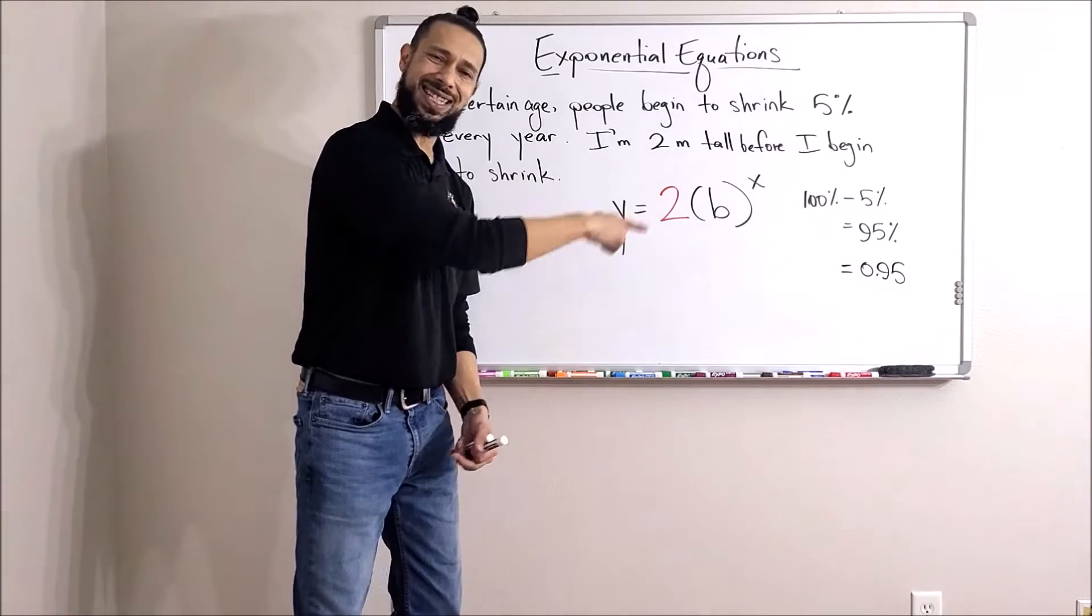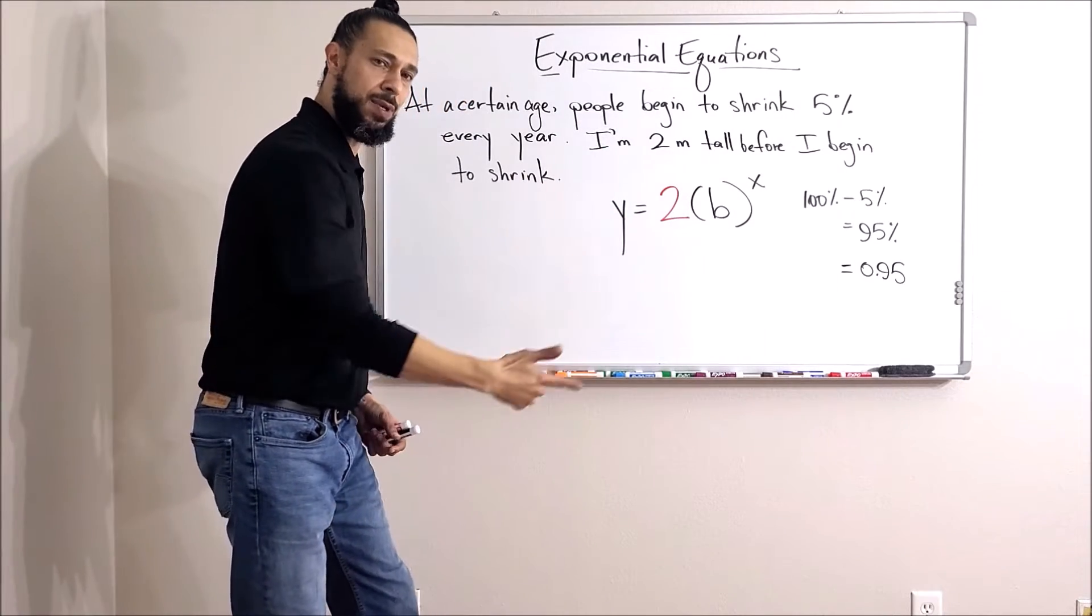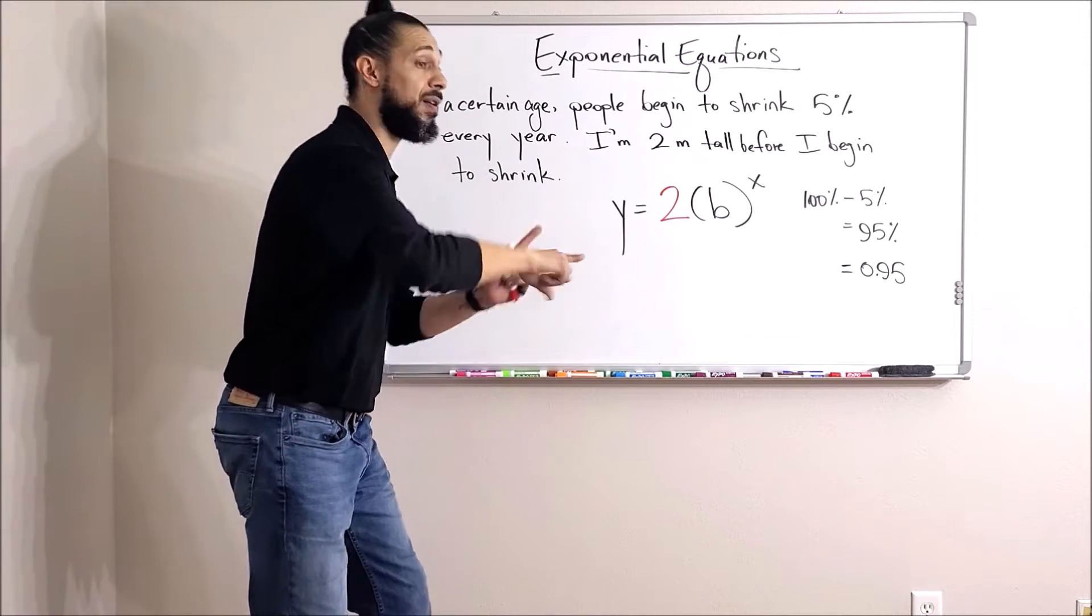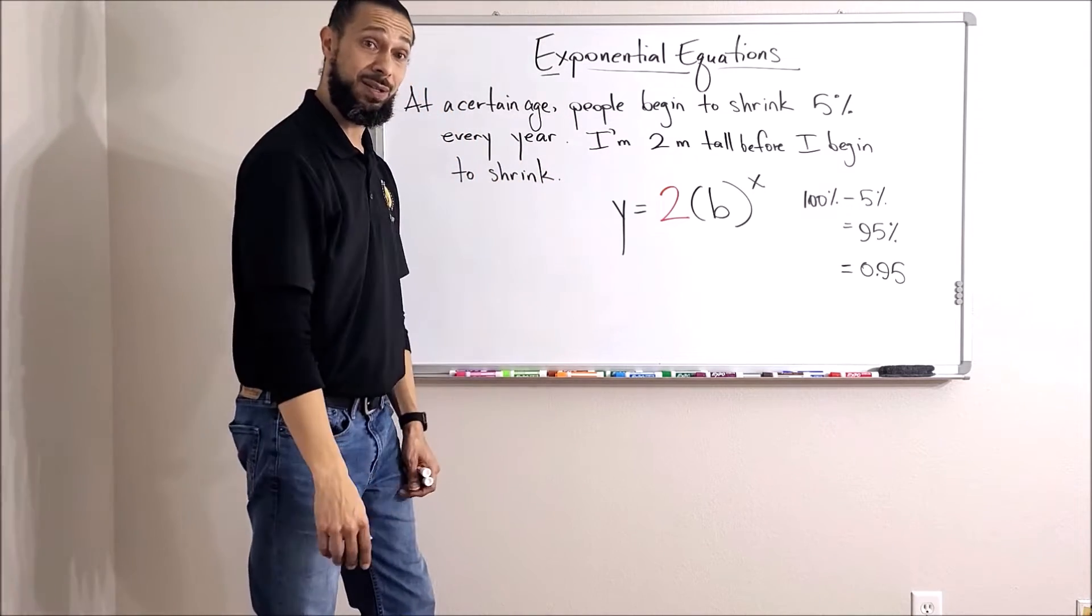Yeah, and isn't that what I'm going to multiply by each time? I multiply by 0.95 to find out what the smaller amount is, then I multiply by 0.95 again to take five percent off again, then I multiply by 0.95 again. Sounds like my rate of change and it should go right there.